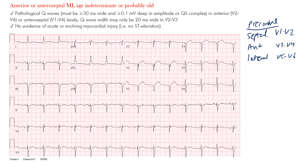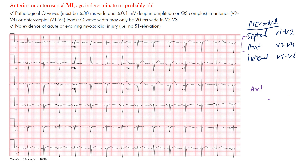These are the precordial leads and how we localize infarcts. For an anteroseptal MI it may involve V1 to V4. You can sometimes have spread into adjacent leads — for example an anterior infarct centered on V3 and V4 may also involve some of V2 and V5. Lead placement is not a perfect science, so don't be too strict; sometimes we include V2 to V4 or V2 to V5 as anterior.